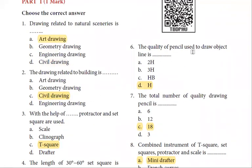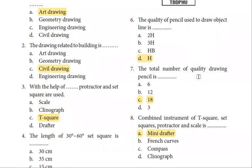The quality of pencil used to draw the object lines - we will use the hutch type pencil. Next is the total number of quality of drawing pencil. 18, there are 16 types. We will discuss this in the Unit 1 content video. What types are there? There are 9 types in the hutch type, there are B types of 7 pencils, there are F type and HB type. Total is 16.